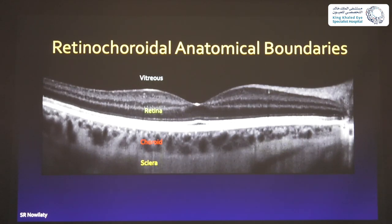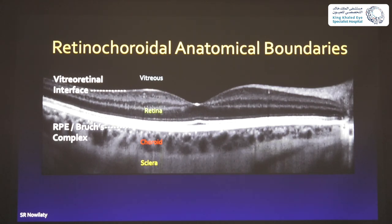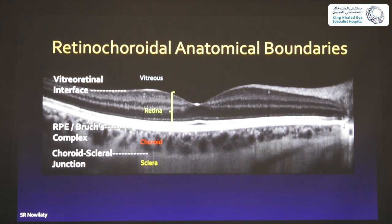The OCT of the macula: what are the boundaries it should distinguish? You have the vitreoretinal interface between the vitreous and the retina, and then the RPE and Bruch's membrane. The RPE lies on Bruch's membrane, and anything in between is called the retina. Then you have the choroid, the chorioscleral junction, and the sclera — which is avascular and therefore pretty much homogeneous. The vitreous is usually clear unless there is pathology, and therefore it is very hypo-reflective.